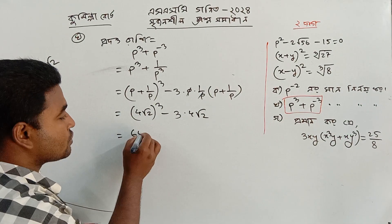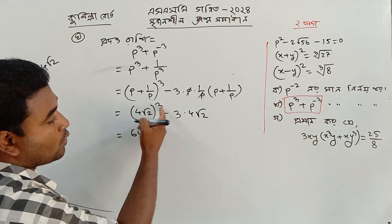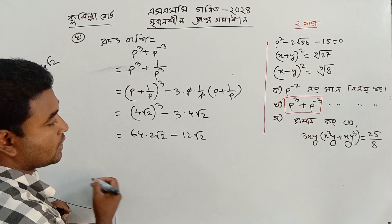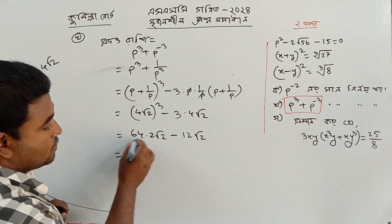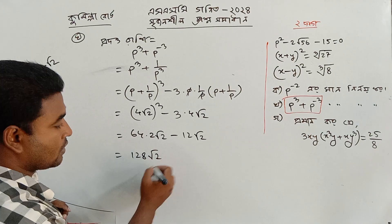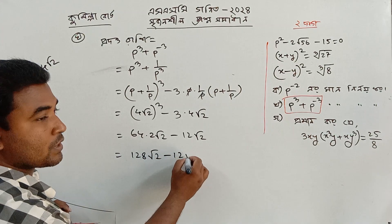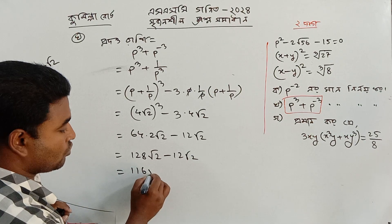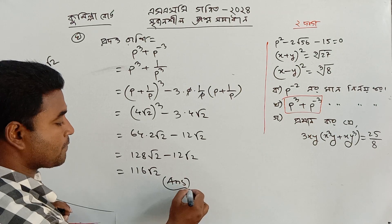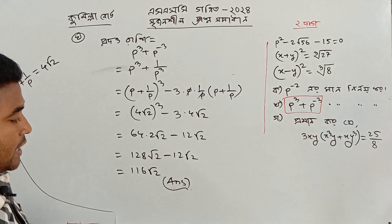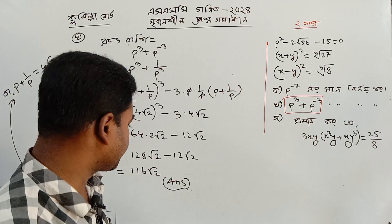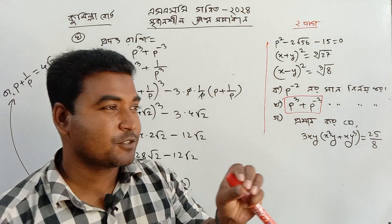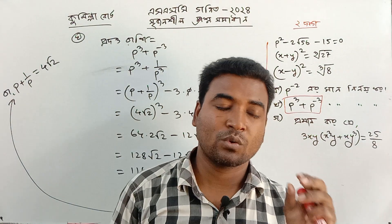4 root 2 cubed minus 3 root over 2 times 4 root 2, minus 2 root over 2, 1 root 2, 2 root 2.